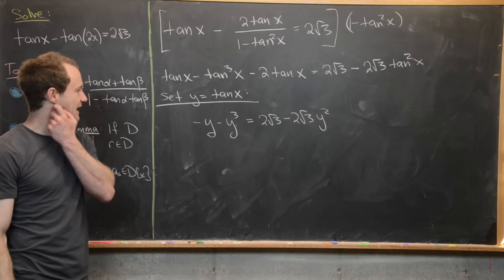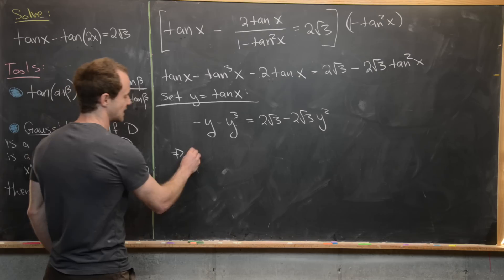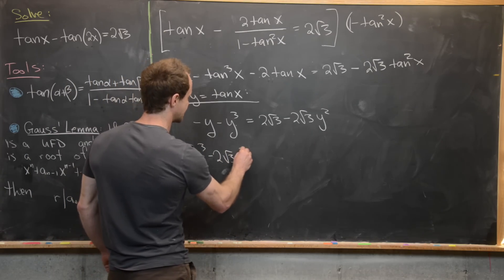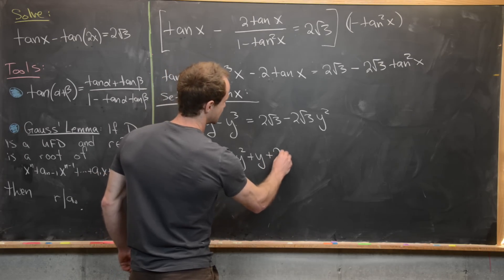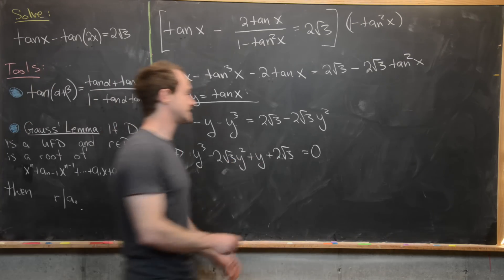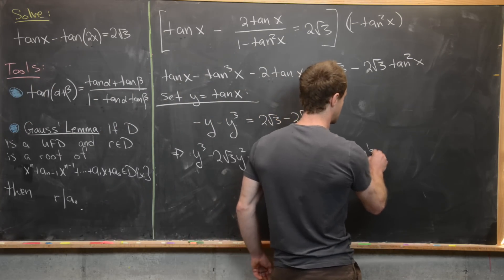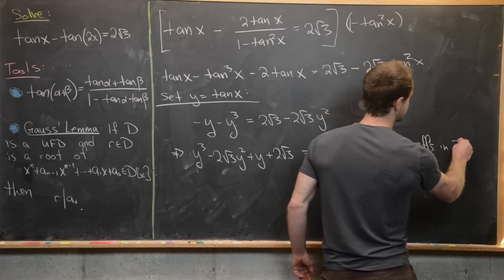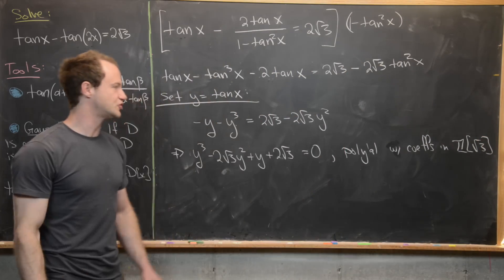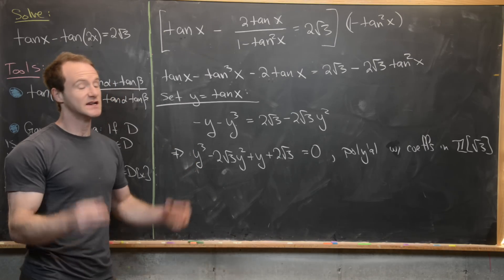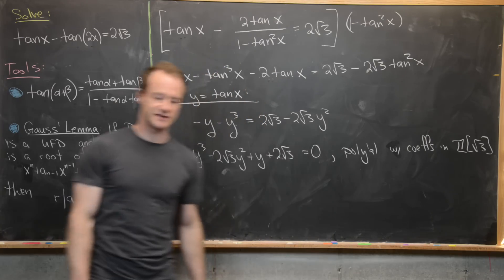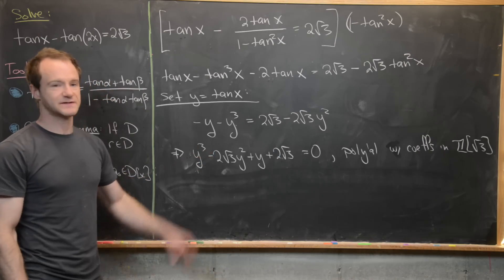Rearranging so we have a polynomial equal to zero gives us y cubed minus 2 root 3 y squared plus y plus 2 root 3 equals 0. This is a polynomial with coefficients in Z adjoined root 3 — the integers with the inclusion of the square root of 3 — which is a Euclidean domain and therefore itself a unique factorization domain. So we want to look for roots of this polynomial.